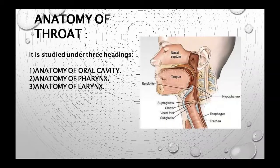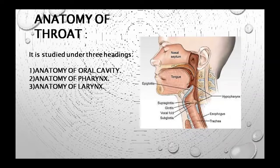This is our next anatomy and physiology class in which today we will study about the anatomy and physiology of the throat and neck. The chapter covers three headings: anatomy of the oral cavity, anatomy of the pharynx, and anatomy of the larynx. The diagram shows the nasal septum, tongue, epiglottis, hypopharynx, supraglottis, glottis, vocal fold, subglottis, and esophagus.